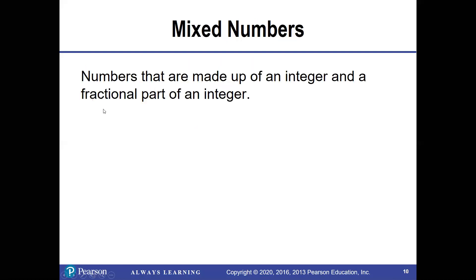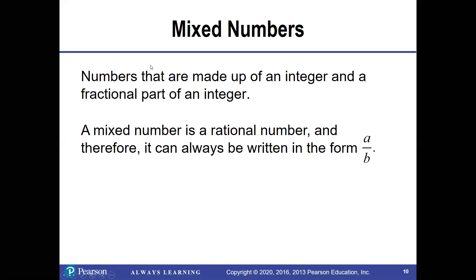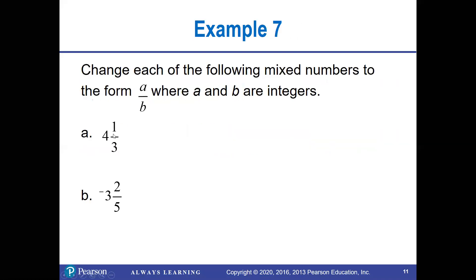What happens if we get a mixed fraction? In younger levels you deal with mixed fractions more, but at higher levels not as much. A mixed number is made up of an integer and a fraction, and is also a rational number that can be written as a/b. You use them in cooking, measuring — but when adding and subtracting, it's a whole lot easier to convert them to improper fractions.